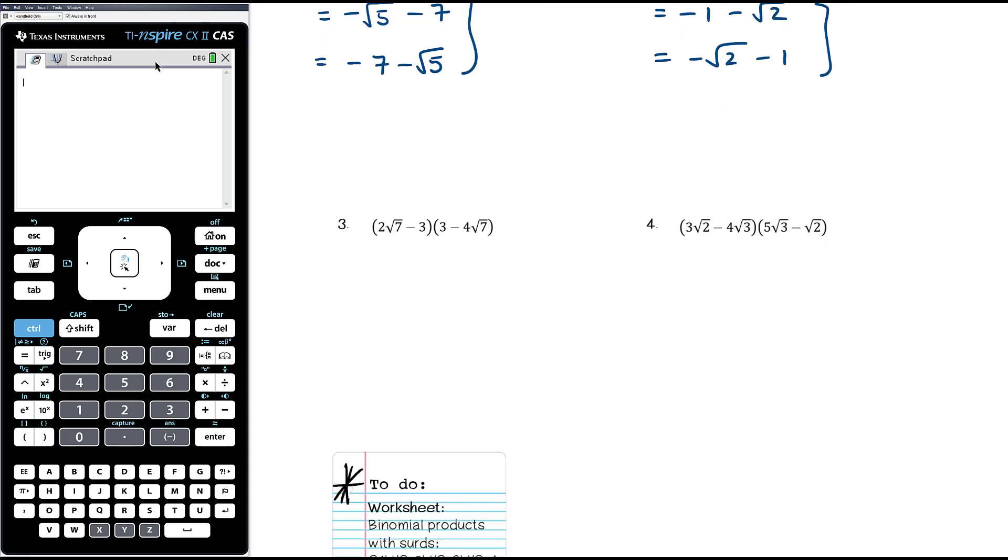Okay, example 3, 2 root 7 minus 3 times 3 minus 4 root 7. So again, just take it one step at a time. 2 root 7 times 3, that's 6 root 7. 2 root 7 times negative 4 root 7, so positive times a negative, so it'll be negative. 2 times 4 is 8, and root 7 times root 7 is 7.